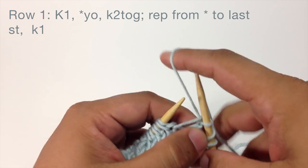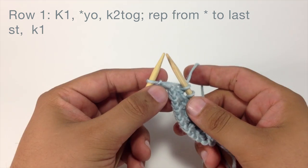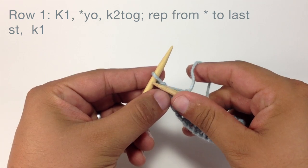So we are going to continue yarning over and knitting two together until the last stitch in our row. When you reach the last stitch in the row we are going to knit one.